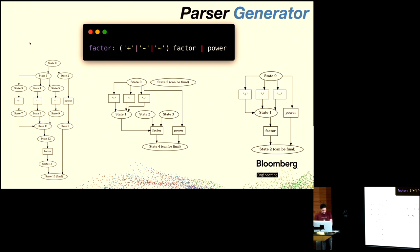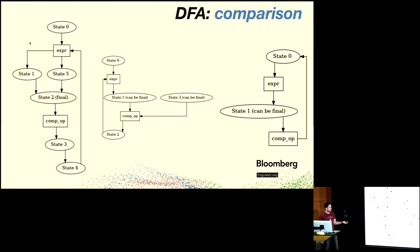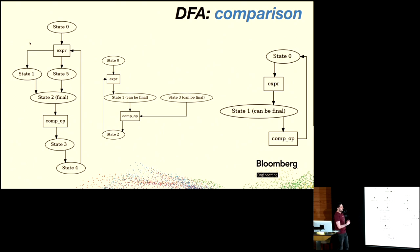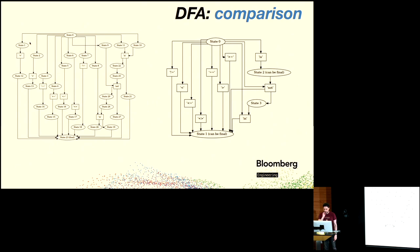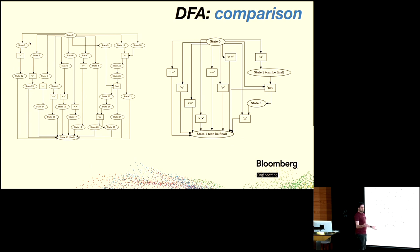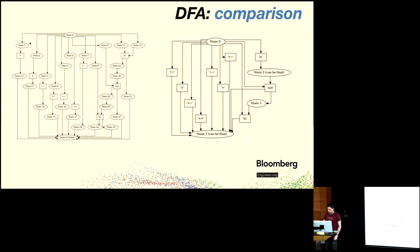Looking at some DFA examples: for the comparison rule, we see the non-DFA on the left, the intermediate DFA in the middle, and the simplified one on the right. You can see things you'd recognize as comparison operators — not equals, less than, greater than. When the rule is more complicated, the non-DFA is a monster, but the simplified DFA is much clearer. For the decorator rule, you can see at a high level what you can decorate: async functions, class definitions, and functions — nothing more, because the rule doesn't allow it.